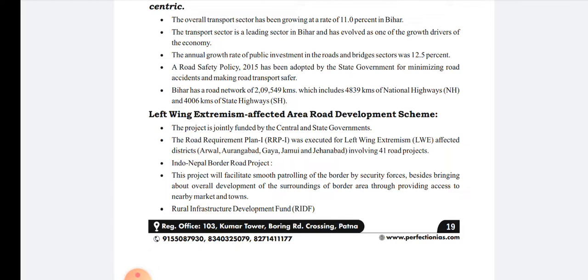The Left Wing Extremism affected area road development scheme is separately highlighted because Naxalite-affected areas specifically target roads, as roads symbolize development and are a basic prerequisite after which later phases of development take place. The project is jointly funded by the center and state government. Road Requirement Plan 1 was executed for LWE-affected districts — Arwal, Aurangabad, Gaya, Jamui, and Jehanabad — involving 41 road projects. There are also separate projects at the Indo-Nepal border.